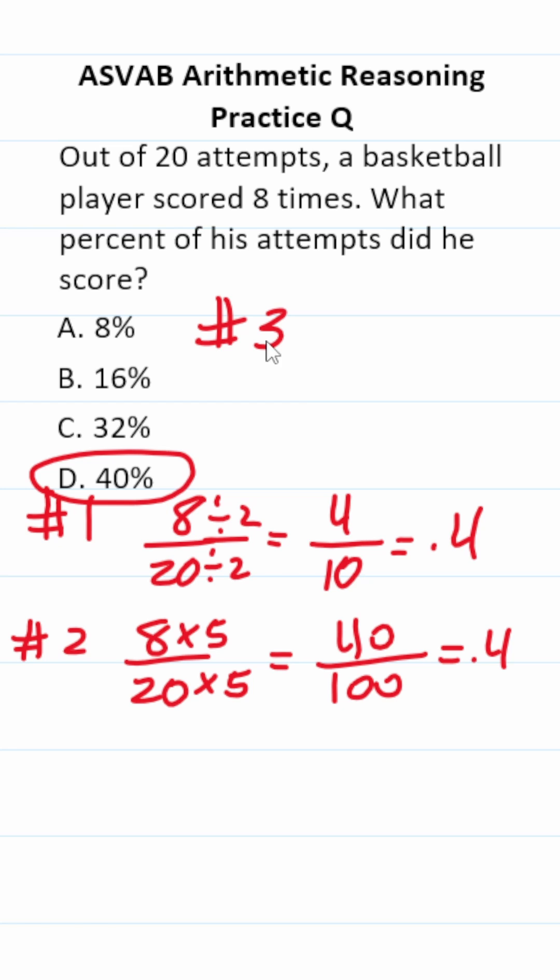Now, the third way to solve this one is to say you have a basketball player who scored eight out of 20 times. View this as long division as 8 divided by 20. And if you do this long division, you'll notice that this becomes 0.4.